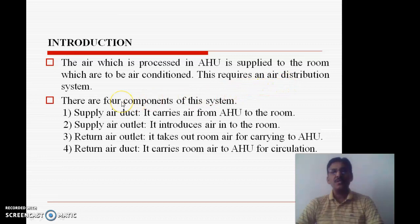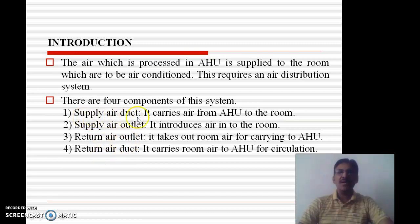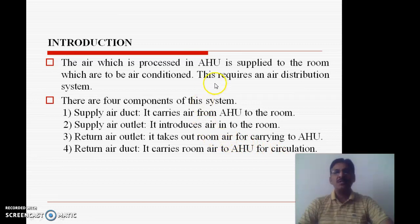If you consider the air distribution system between the AHU and the room which is to be conditioned, there are four components of this system. First: supply air duct. Second: supply air outlet. Third: return air outlet. Fourth: return air duct. The supply air duct carries air from the air handling unit to the room. The supply air outlet introduces air into the room. The return air outlet takes out room air for carrying to the air handling unit, and the return air duct carries room air back to the AHU for circulation.